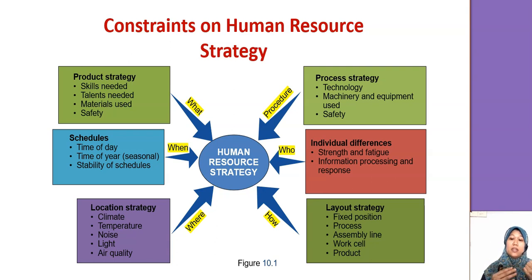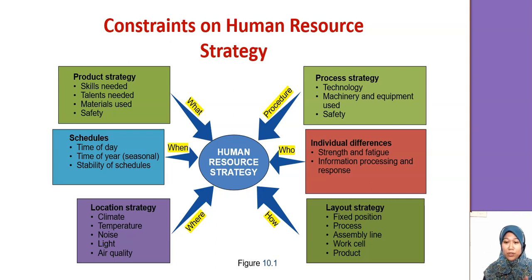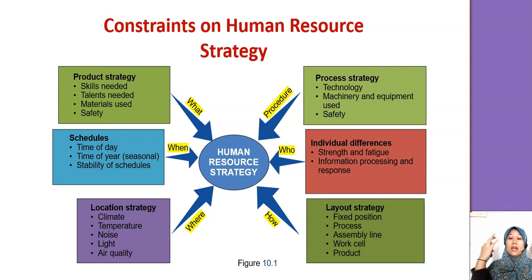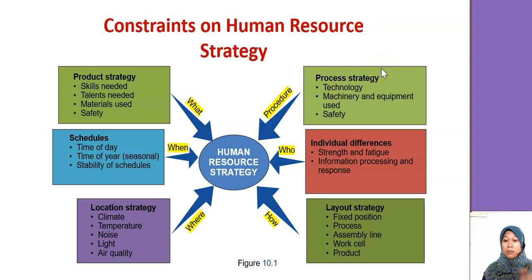The location strategy requires ensuring that the factory or service center has a comfortable condition for workers. For example, temperature should not be too cold; if noise is too high, workers need to wear PPE; and proper lighting is needed, especially when dealing with small assembly work, which requires more light compared to other conditions.